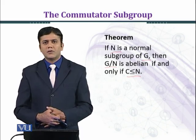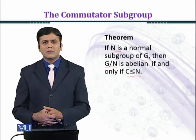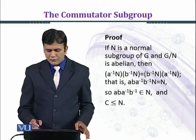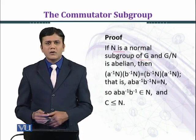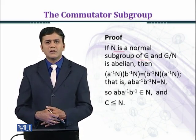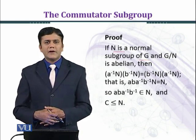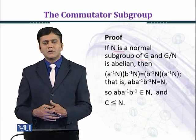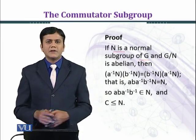We have already proved in previous modules that C is a subgroup of G, and moreover that C is a normal subgroup of G. Now let us prove this theorem. If N is a normal subgroup of G and G over N is abelian, then we want to show that the commutator subgroup C is a subgroup of N. We shall also establish the converse: that C being a subgroup of N implies G over N is commutative.